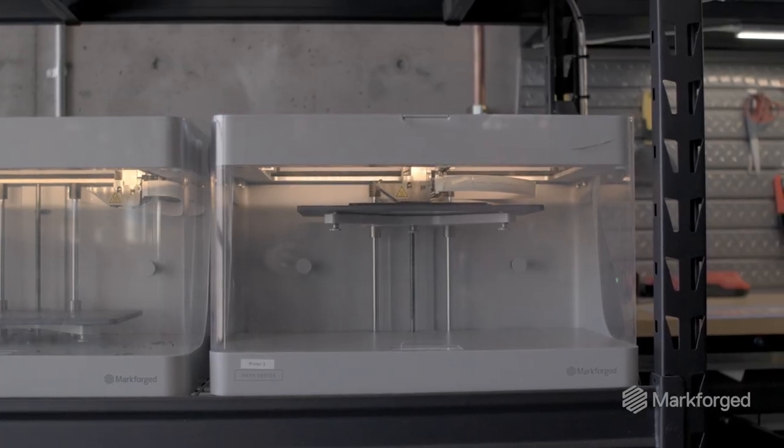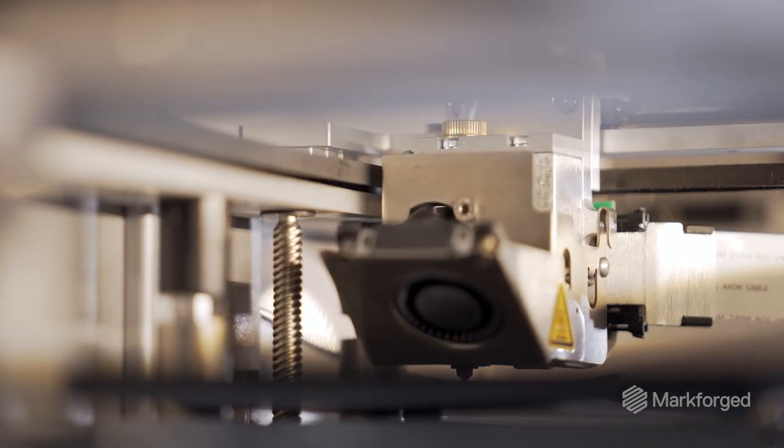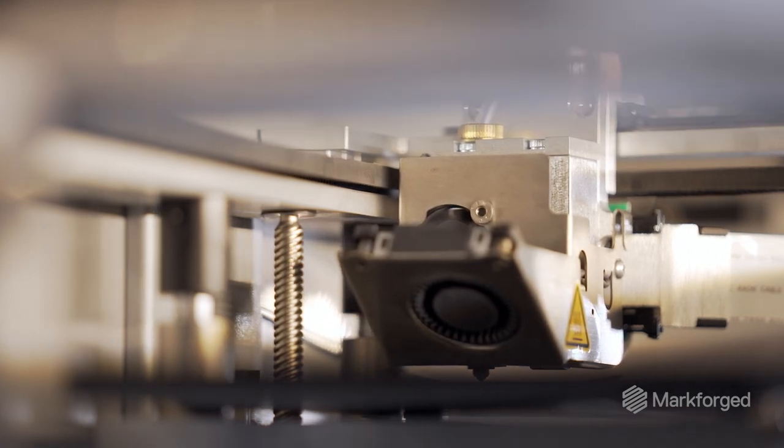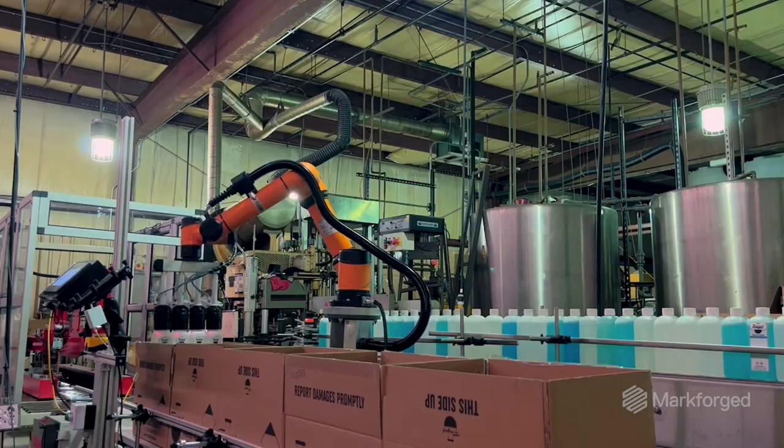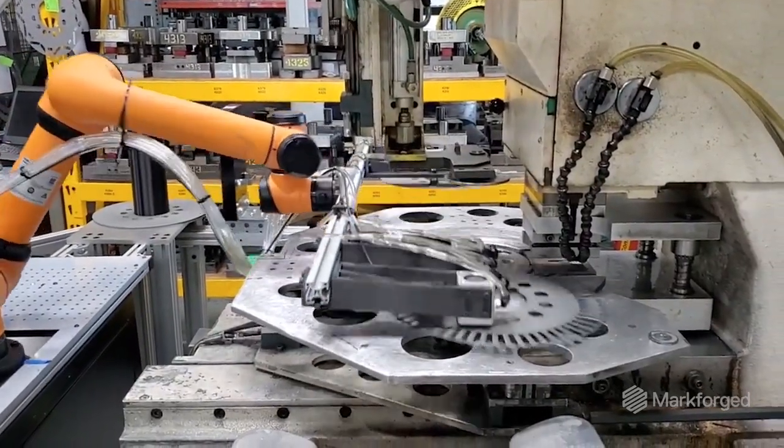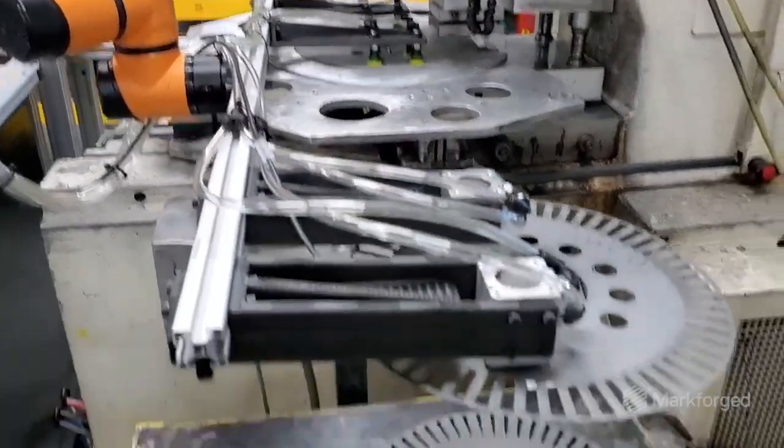When we had to make a decision on a 3D printer, one of the most important things was, can it print continuous carbon fiber? We've been deploying robots with grippers that were printed on Markforged printers since day one, and we have never had a gripper break in the field.